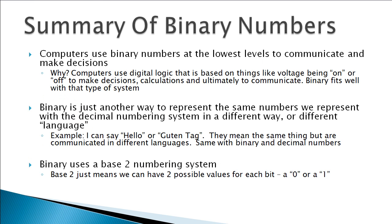Let's get into binary numbers. A quick summary: computers at the lowest level use binary numbers to communicate and make decisions. When you look at how a computer really works, it's based on digital logic, and that logic is based on voltage being either in the on position or the off position. Computers make decisions based on two different states — either on or off — because there are only two possible states.